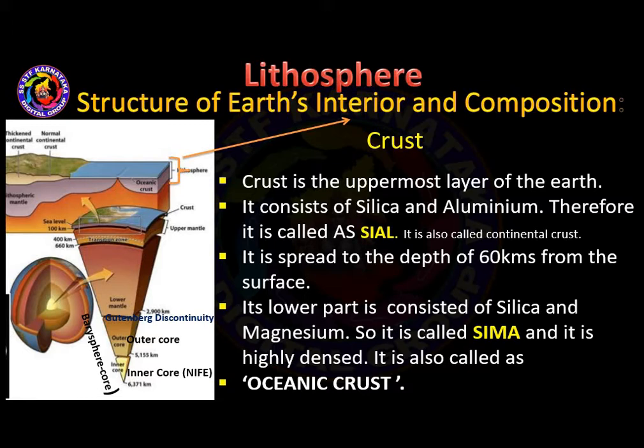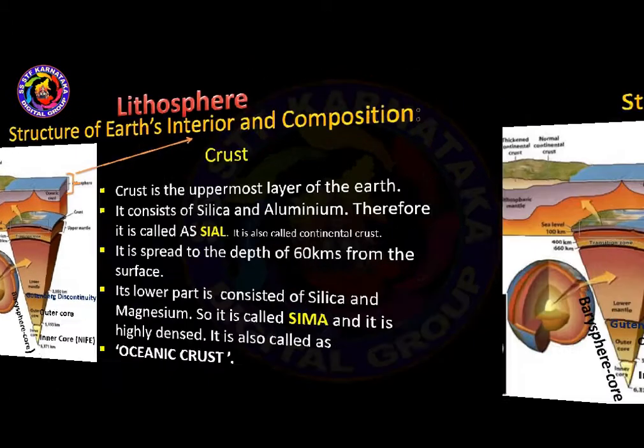The lowermost part of the crust is formed with silica and magnesium, that is why it is called SIMA, and it is also called the oceanic crust.